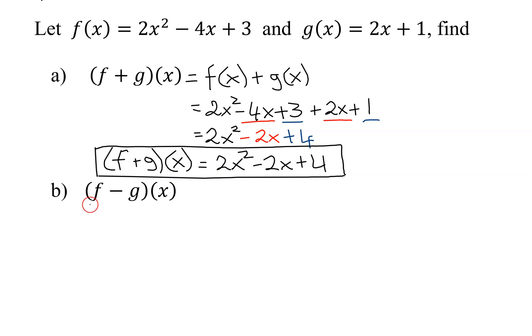Now in part b, we need to find f minus g of x, which is the difference function, which means I'm going to start with f of x, and then I'm going to subtract g of x. So what is f of x? It's up here. It's 2x squared minus 4x plus 3 minus, now you have to put g of x in parentheses because I'm going to have to distribute in this negative. And g of x is 2x plus 1.